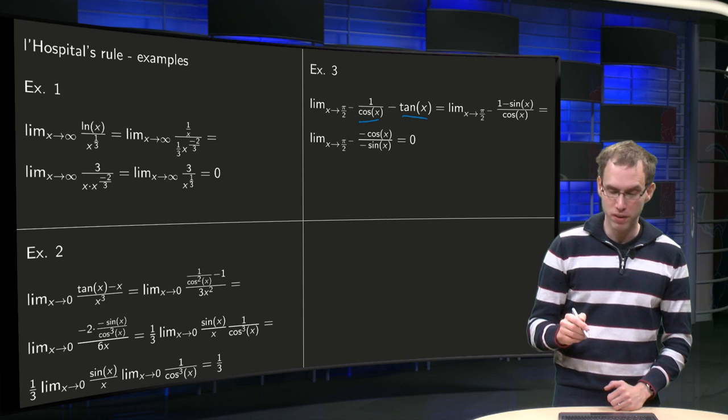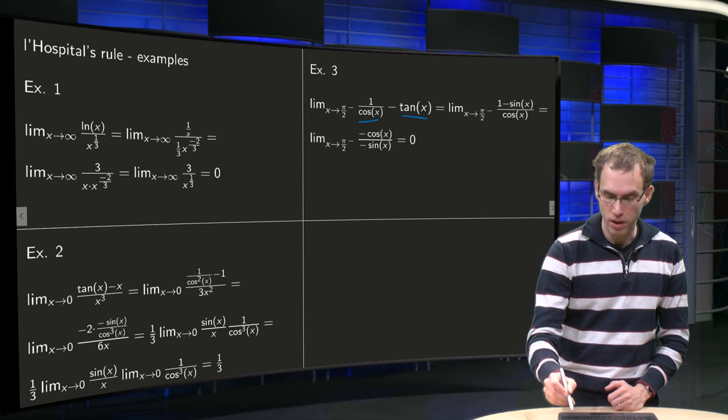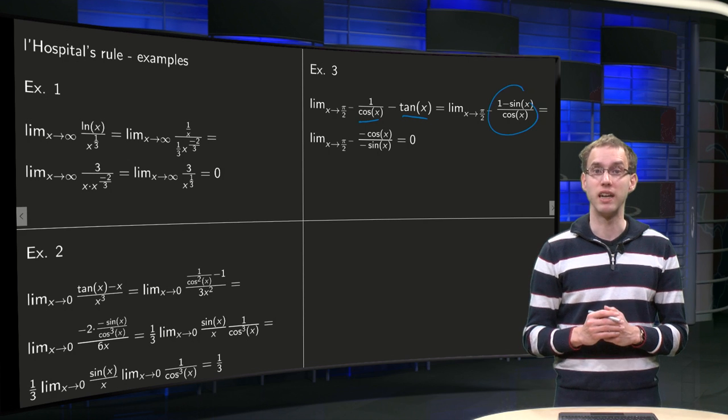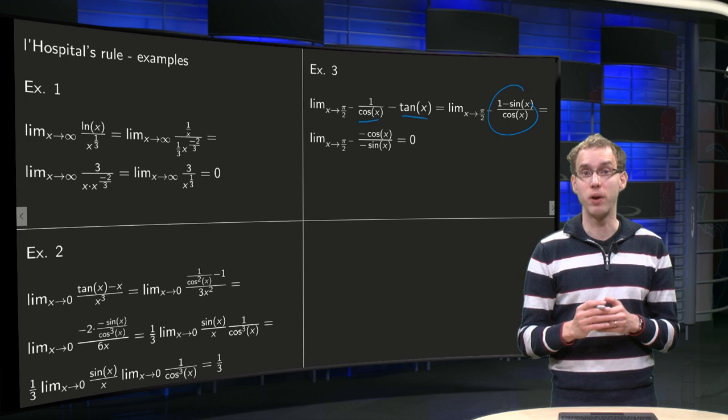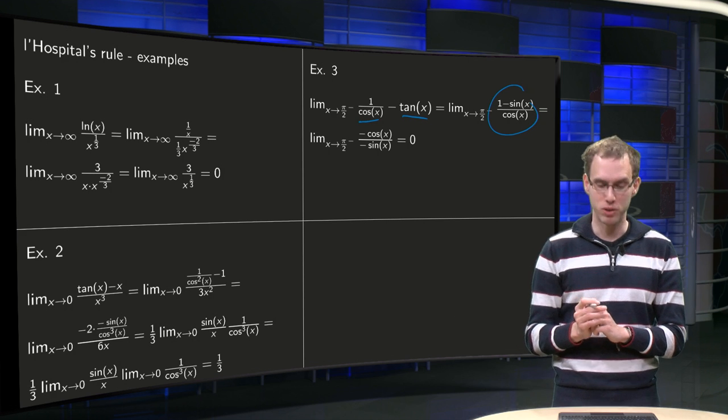So what do we do? We turn it into one fraction. We get x to pi over 2 of 1 minus sine x over cosine x, and then we have a 0 over 0, but then we can apply L'Hopital's rule.